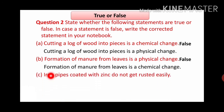Next one: iron pipes coated with zinc do not get rusted easily. If we coat an iron pipe with zinc, rusting will not happen easily on it. Is it true or not? Yes, it is true. We either provide a zinc coating on iron pipes or paint over them, so rusting will not happen easily.